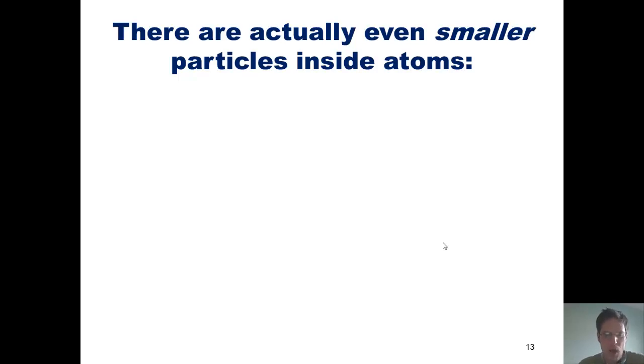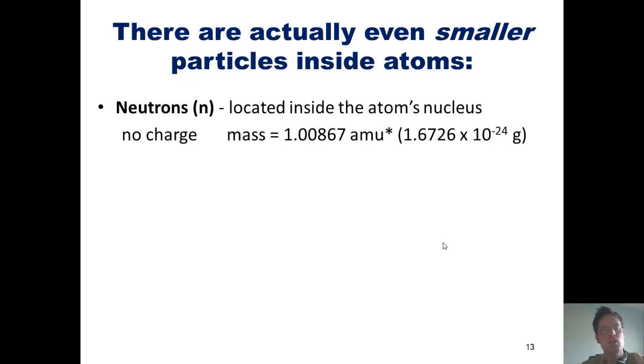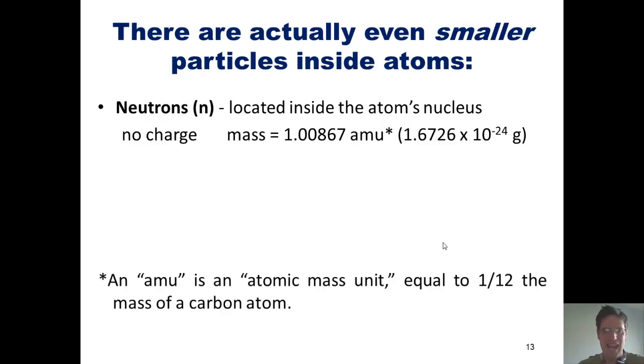Believe it or not, there are actually even smaller particles located inside atoms. I'm going to teach you about three of them, with which you will shortly become familiar. The first is the neutron. Neutrons are located inside atoms' nuclei, or the atom's nucleus. Neutrons have no charge, and their mass is around 1.00867 amu. An amu is an abbreviation for an atomic mass unit, which is equal to one-twelfth of the mass of a carbon atom.